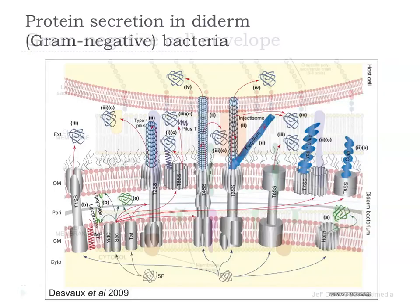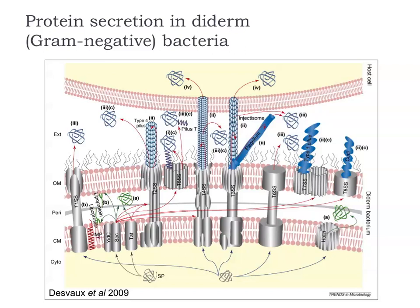This is a busy figure but it gives a flavour of the complexity in terms of the variety of different protein secretion systems that exist in gram-negative bacteria. This is from a review by Michael Desvo, who used to work here with Ian Henderson, written a couple of years back, trying to classify all these different systems and come up with a unified nomenclature and naming system for them.